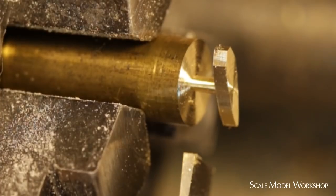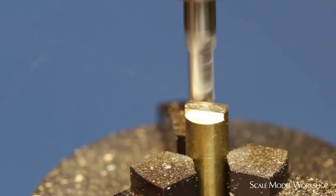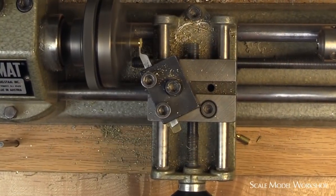Whenever the details get small and they have to be crisp and clean, I almost always fabricate them from brass. And most of the time, that always means a combination of machine and handwork.